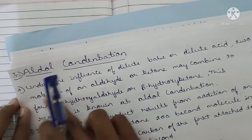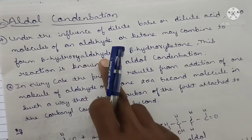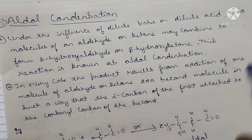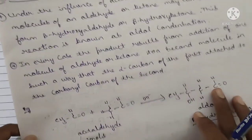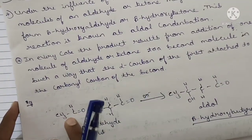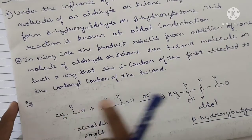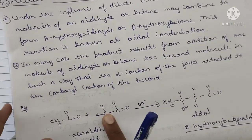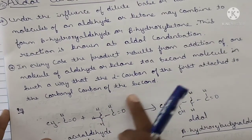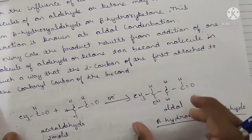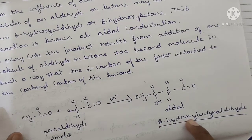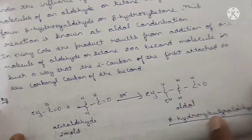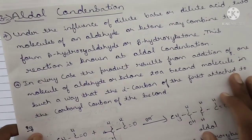Today and tomorrow's session, inshallah, we will complete all these condensation reactions. Starting with aldol condensation: under the influence of dilute base or dilute acid, two molecules of aldehyde react to form a beta-hydroxy aldehyde or beta-hydroxy ketone. This reaction is known as aldol condensation. The condensed product formed is known as aldol, or beta-hydroxy butyraldehyde.